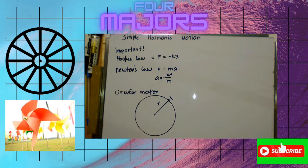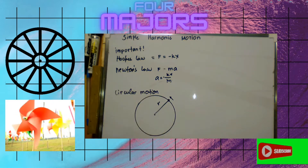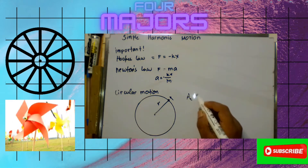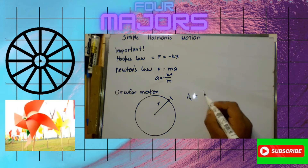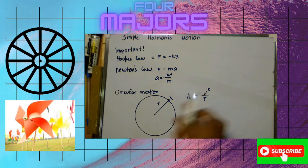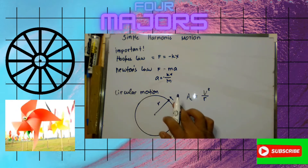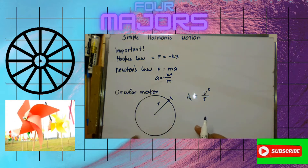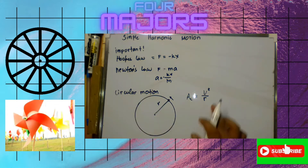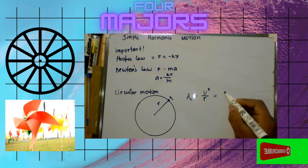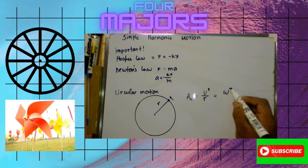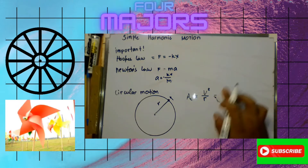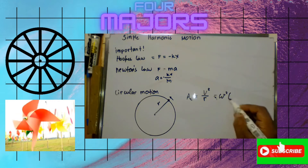We are going to use concepts from circular motion, specifically the centripetal acceleration. The centripetal acceleration is given by v² over r, where v is the speed of the object moving along the edge of the circle and r is the radius. This is equal to angular velocity squared times the radius.